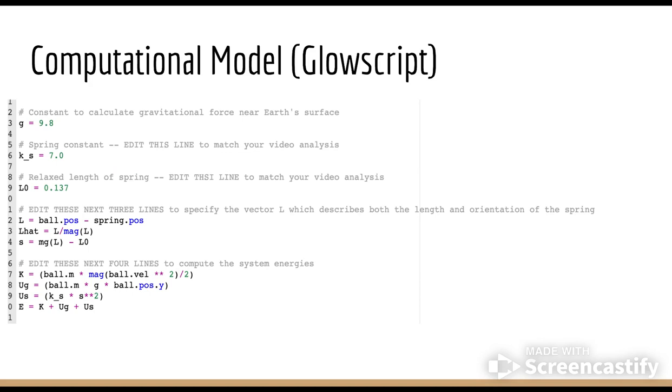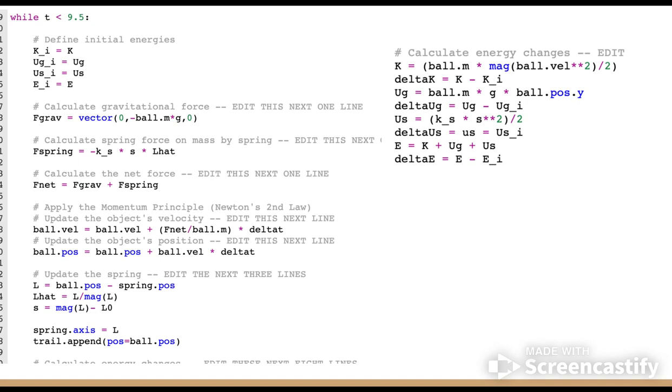As we begin iterating, the total time is approximately 9.5 seconds. The initial energies will then need to be updated inside the loop. The forces are calculated using Newton's second law and position update formula. The spring is updated using the same steps, and all of this leads us for our code to be ready and to be run so we could extract our data.